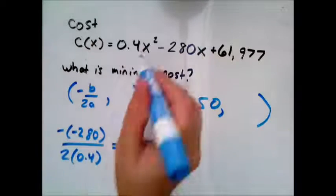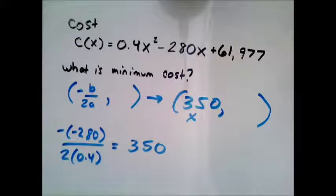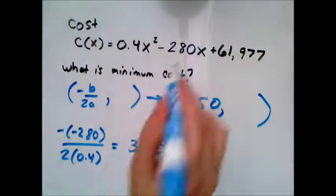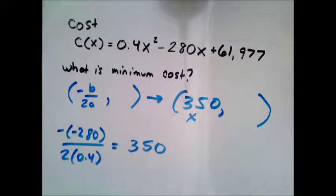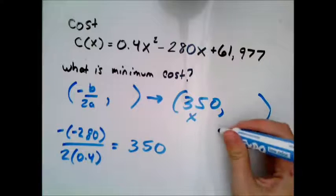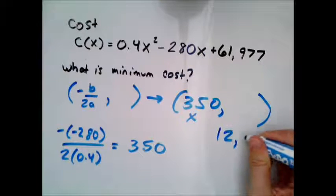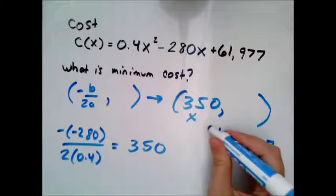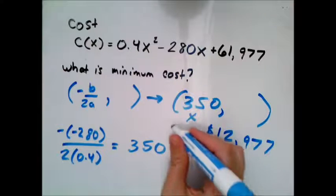So 0.4 times 350 squared minus 280 times 350, so just putting 350 in there for x, plus this 61,000 number. And so it looks like I get 12,977 for the cost at that point.